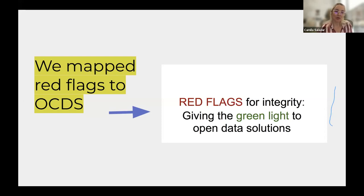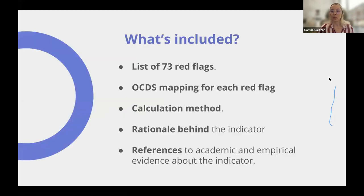We mapped red flags to the Open Contracting Data Standard and developed a guidance list of indicators that you can calculate using OCDS data. We recently updated this material. What I'm going to show you is a spreadsheet with a list of 73 red flags, an OCDS mapping for each, a calculation method, the rationale behind the indicators, and references to academic or empirical evidence. In case you want to investigate further or read the paper and see the model, you can find that in our guidance as well.